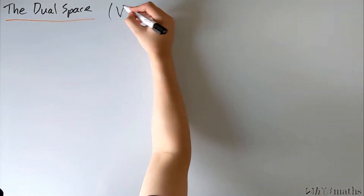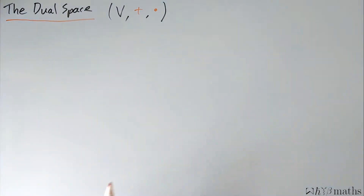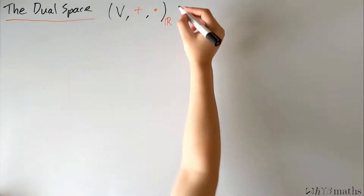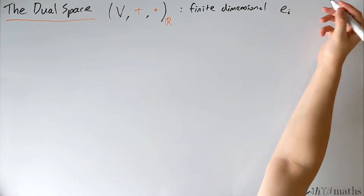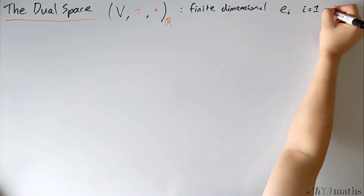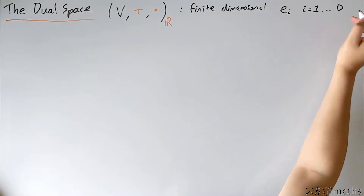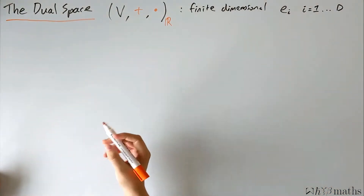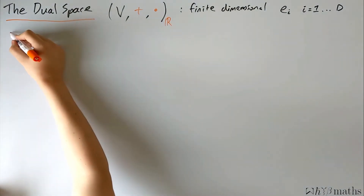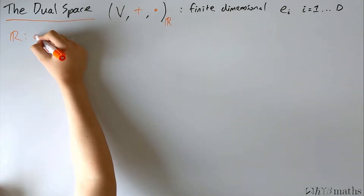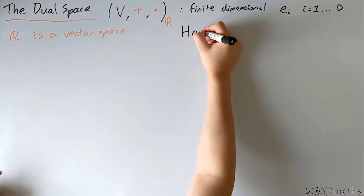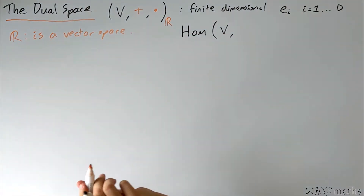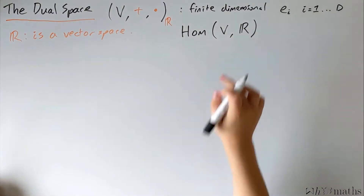I'll begin with a vector space, as we're used to, which is over the set of real numbers, and this is going to be a finite-dimensional vector space, meaning that the number of basis vectors we have — these e_i's — where i runs from 1 up to some finite number d, where d is the dimension of the space. The field of real numbers is itself a vector space, or can be realised as one. So in the spirit of the previous video, where we introduced homomorphisms between two vector spaces, we could consider the set of homomorphisms between our vector space and the field of real numbers, since the real numbers are just another vector space.